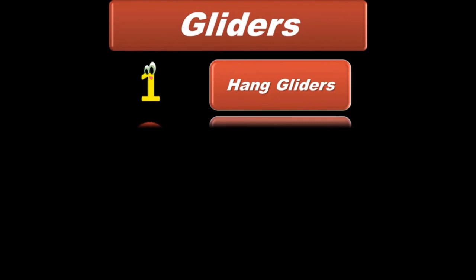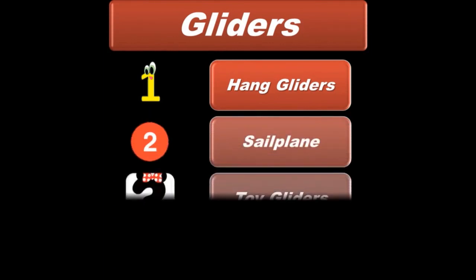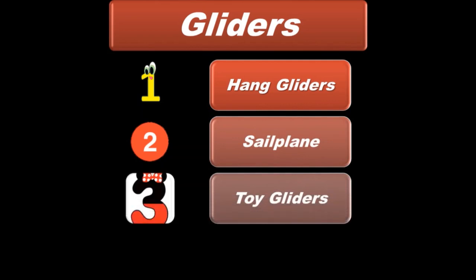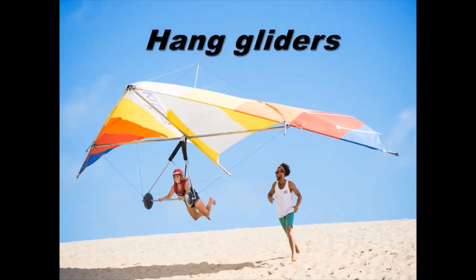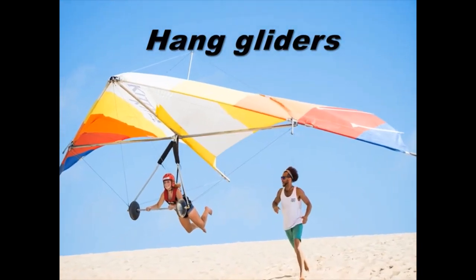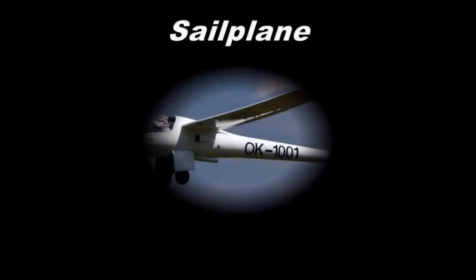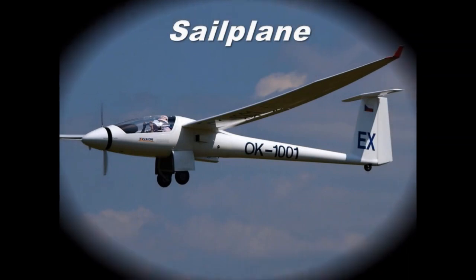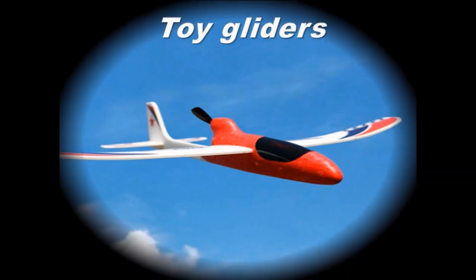Gliders are basically divided into four types: hang gliders, sailplanes, toy gliders, and space shuttles. Hang gliders are lightweight aircraft that can be carried by the pilot and are usually used in the sport of gliding. Toy gliders are made for children with a little knowledge of aeronautics.